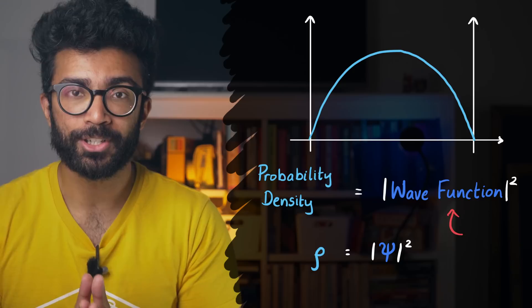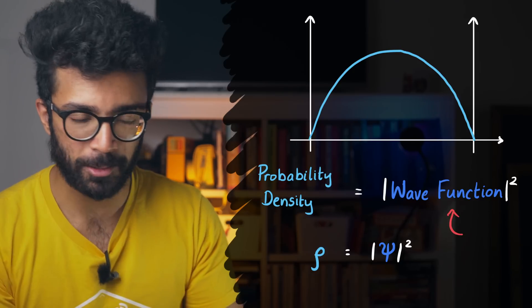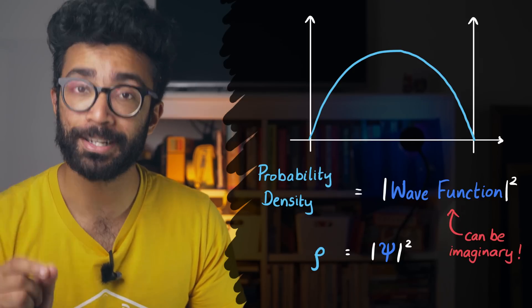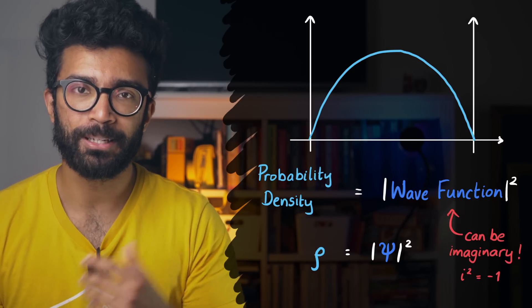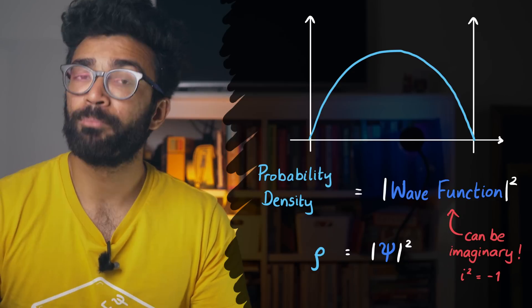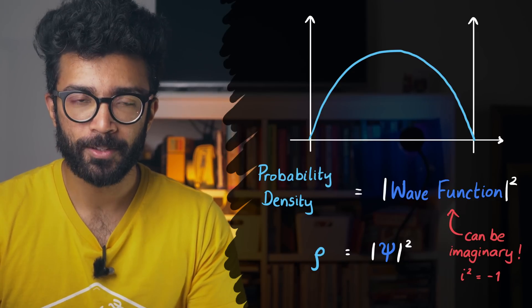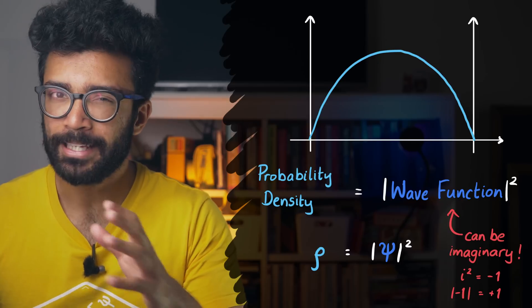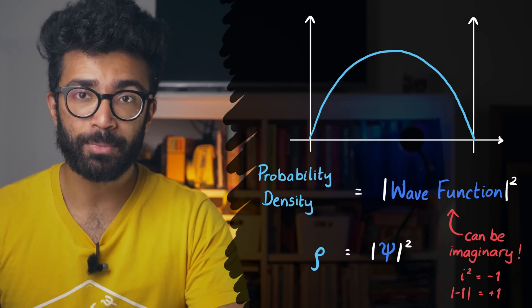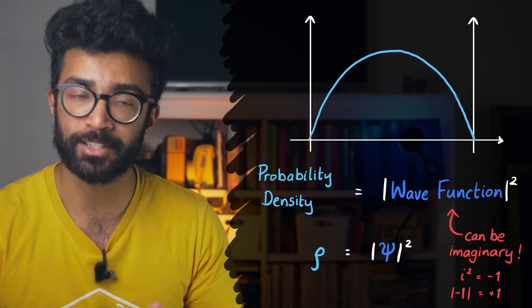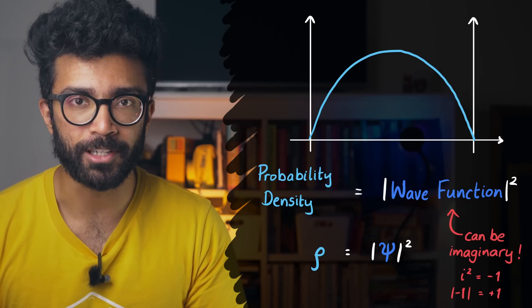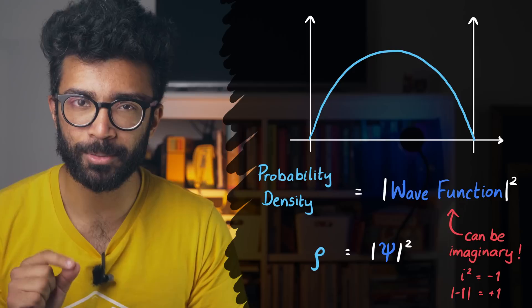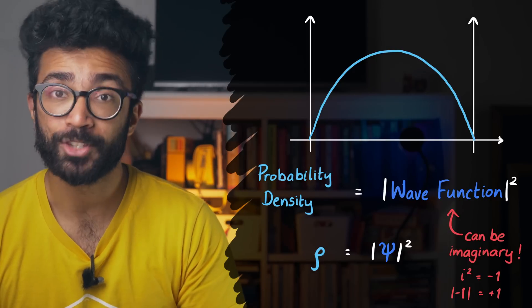Well, that's because the wave function doesn't have to be real all the time. It can also be imaginary. And the square of an imaginary number is negative. But because probabilities can only be positive, this is why we have to take the square modulus. The implications of the wave function being possibly imaginary are interesting. And I'll discuss these in a future video. But I've also talked about them a little bit already in this video up here. Check it out if you're interested.